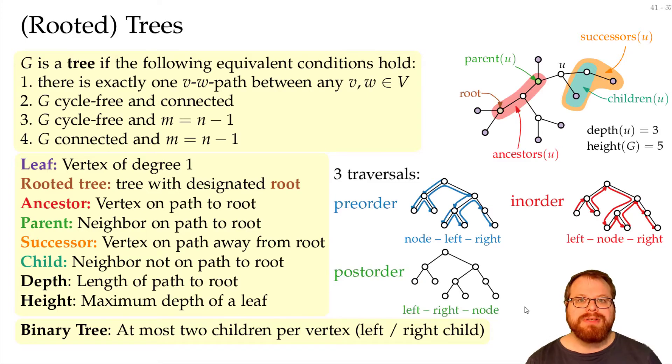And then there is the post-order traversal. Then we first take both children and then the node itself. So we go to the left, we start here. But then we take the right child first before going here. Now we go to the right, go downwards to the child, take the right sibling, go back to the parent, back to the parent, back to the parent.